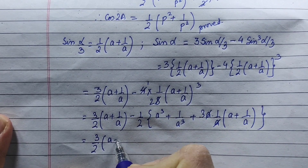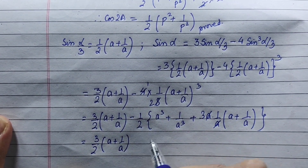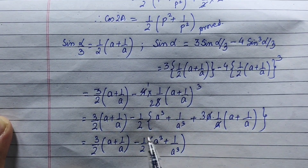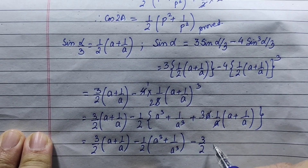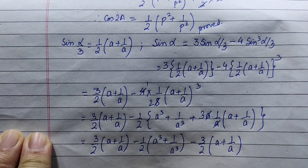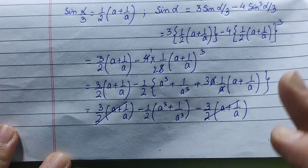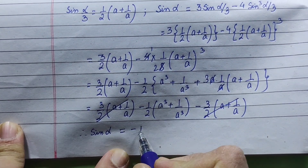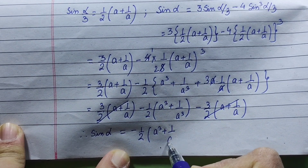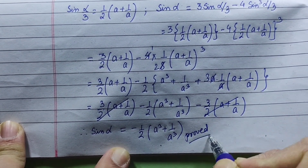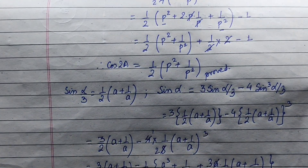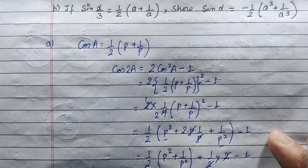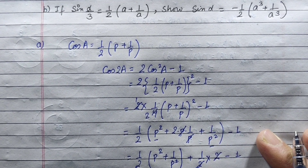3 by 2 times a plus 1 by a. We remove the half terms. That means a cube plus 1 by a cube. This is minus 3 by 2 times a plus 1 by a. So finally sin alpha equals minus half times a cube plus 1 upon a cube. This is our proof. By this equation we can solve multiple angle problems using this formula and concept. Thank you.